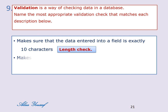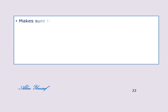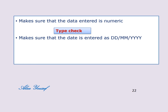Second, make sure that a number lies between 10 and 100 — range check. Next, make sure that the data entered is numeric — type check. Finally, make sure that the data entered is in the format DD/MM/YYYY — format check or picture check.